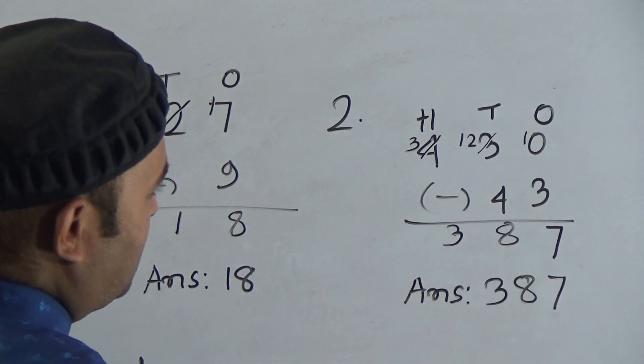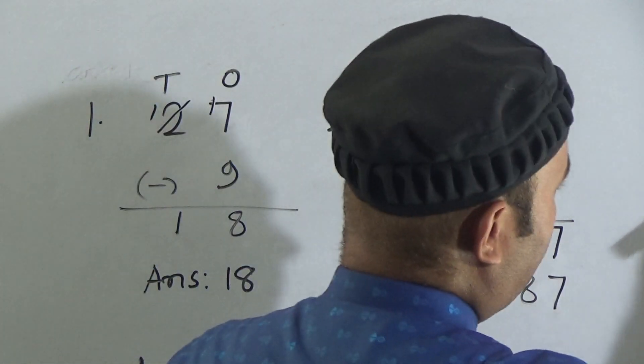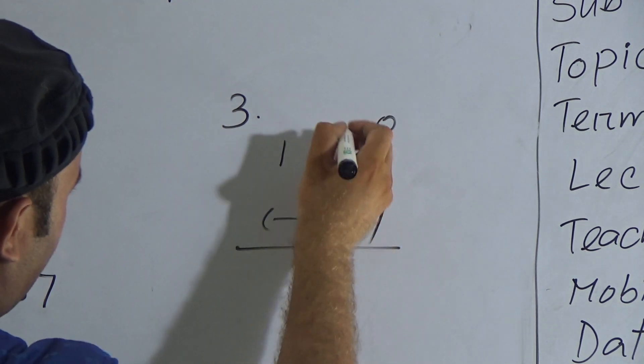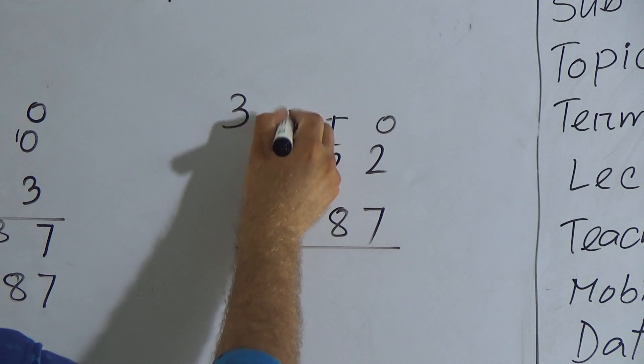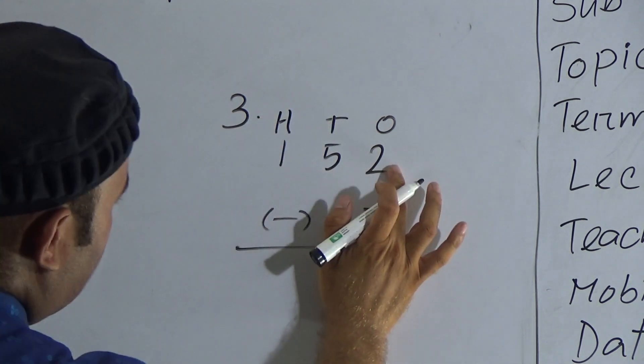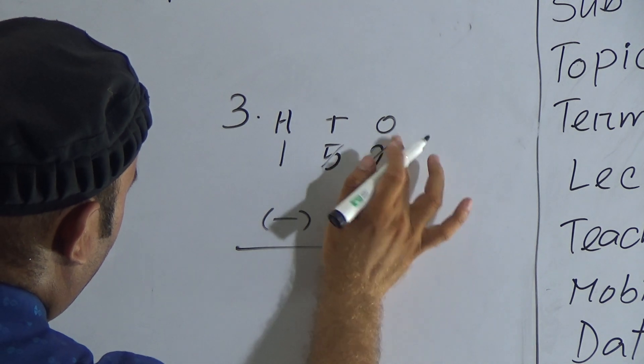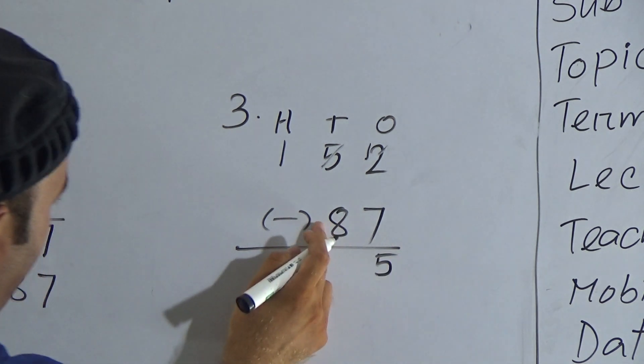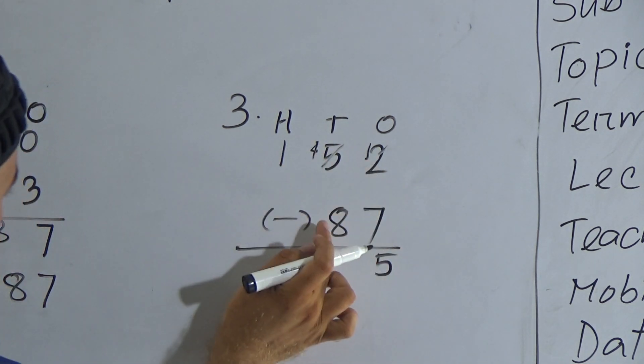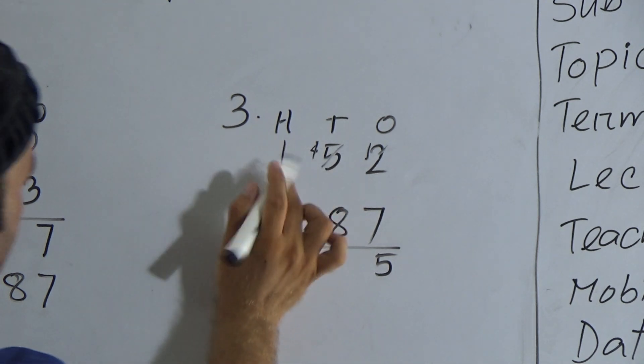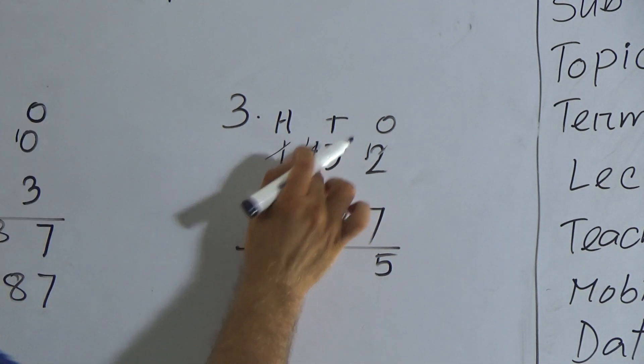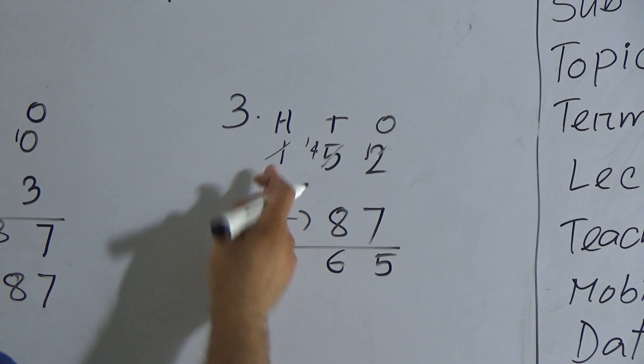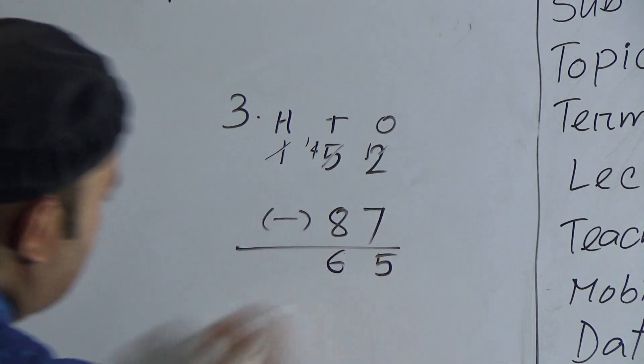Hope you understood. Now here is number 3: 152 and 87. 2 and 7 are in 1's place, 5 and 8 in 10's place, and 1 is in 100's place. 2 is smaller than 7, so we borrow 1, making it 12. 7 from 12 is 5. After taking 1, this becomes 4. Now 8 from 4—we borrow again, making it 14. 8 from 14 is 6. There is no digit here, so the answer is 65.